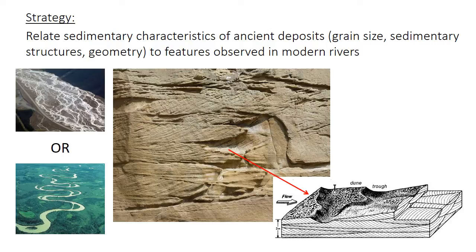The next lecture will cover what a facies is and what facies models are in more detail, but briefly, a facies is just a recognizable unit of rock defined by all of its characteristics: the rock type, the grain size, sedimentary structures, textures, and really any other observation that you could potentially make.